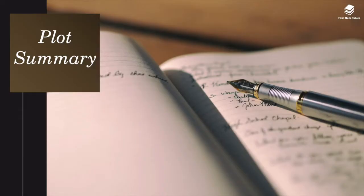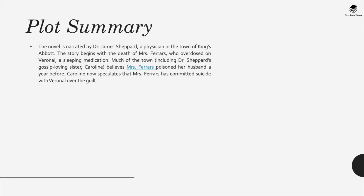On to the plot summary. The novel is narrated by Dr. James Shepard, a physician in the town of King's Abbott. The story begins with the death of Mrs. Ferrars, who overdosed on veronal, a sleeping medication. Much of the town believes Mrs. Ferrars poisoned her husband a year before. Caroline now speculates that Mrs. Ferrars has committed suicide with veronal over the guilt.